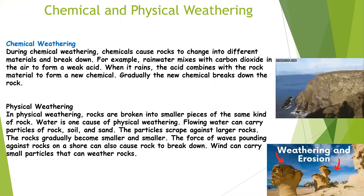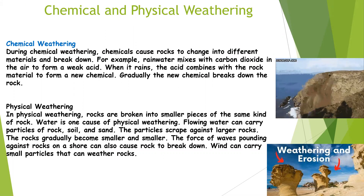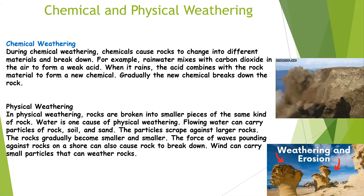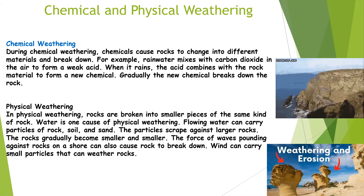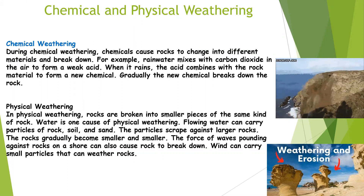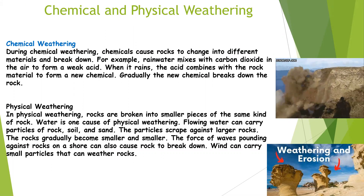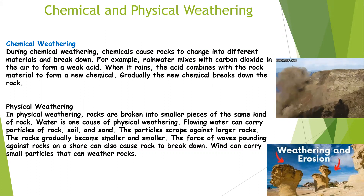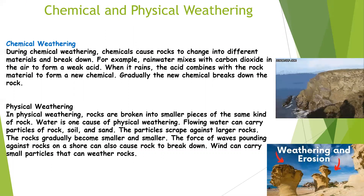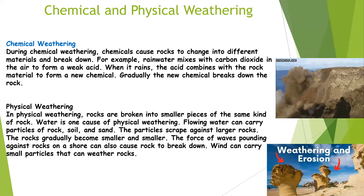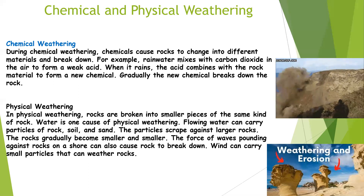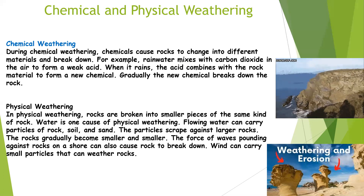During chemical weathering, chemicals cause rocks to change into different materials and break down. For example, rainwater mixes with carbon dioxide in the air to form a weak acid. When it rains, the acid combines with the rock material to form a new chemical. Gradually — meaning over time — the new chemical breaks down the rock.